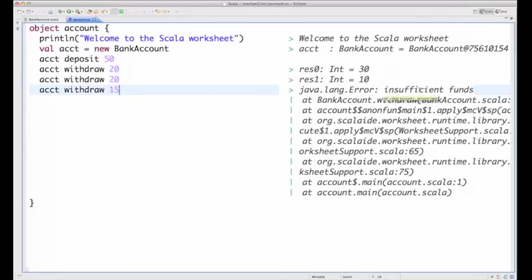So clearly, accounts are stateful objects because when we perform the same operation, like withdraw here twice, the results differ. The first time we got back 30. The second time we got back 10. And, of course, that is because the effect of the withdraw method depends on the history of the object, what operations have been performed before on that object.